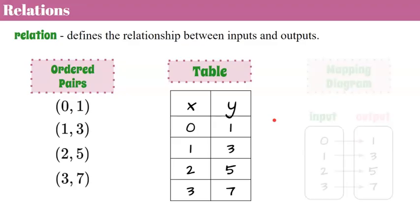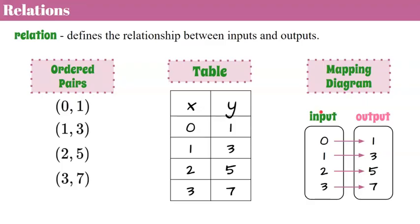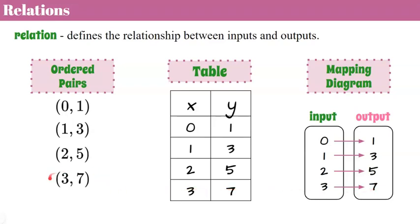There's a third way we can show a relationship: we can use a mapping diagram. A mapping diagram shows a set of inputs and a set of outputs. Each set is usually listed in numerical order from least to greatest — least at the top to greatest on the bottom. Using an arrow, you map the relationship to show what input pairs to what output. So if we look at this mapping diagram, the first entry 0 maps to 1, written as the ordered pair (0, 1). Input 1 maps to 3, written as (1, 3). Input 2 maps to 5, written as (2, 5).